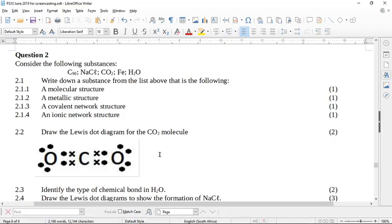Okay, let's look at question two from Limpopo June 2019. Consider the following substances: C90, NaCl, CO2, Fe, H2O. So this is a carbon buckyball, this is table salt, this is carbon dioxide gas, this is iron metal, and this is water.